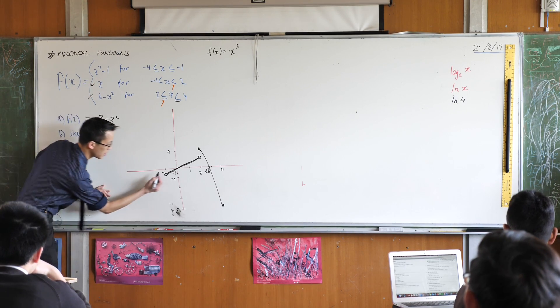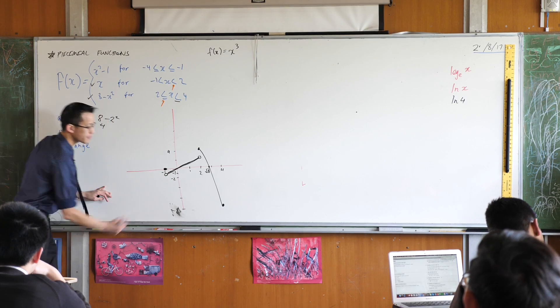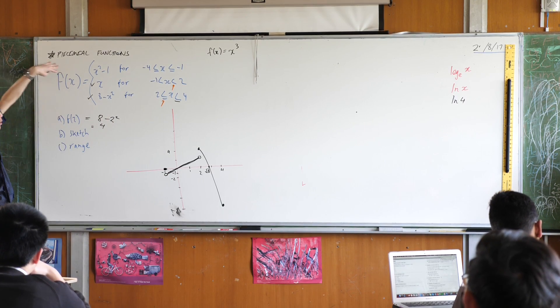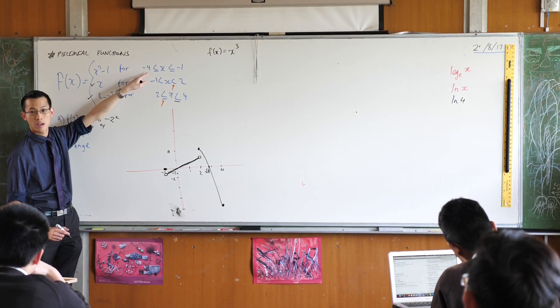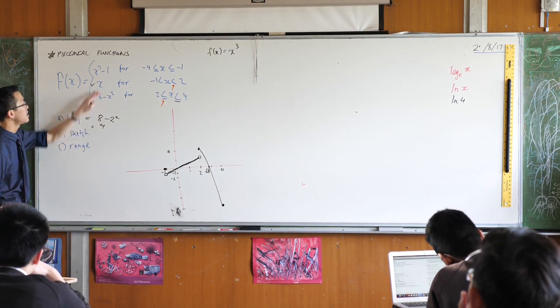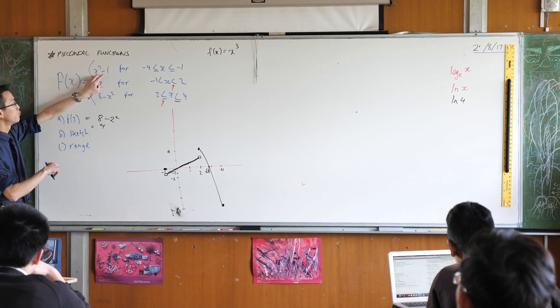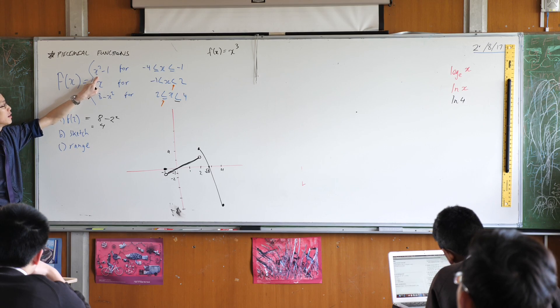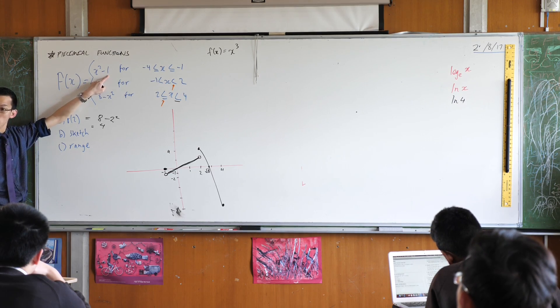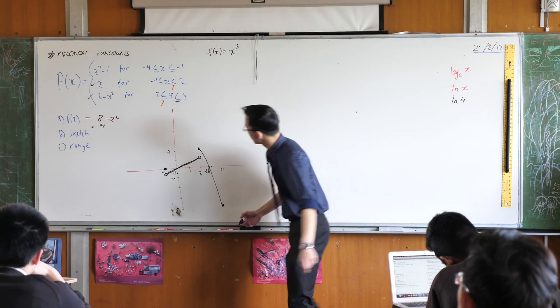Zero. I'm going to put a filled circle there. And then how far do I need to go? Doesn't go forever, does it? It goes all the way up to negative 4. So when x equals negative 4, what I put into here will be negative 4 all squared, which is 16, take away 1, which is 15. Where's 15 going to be?